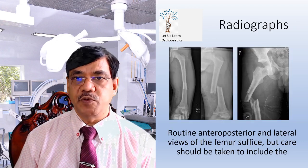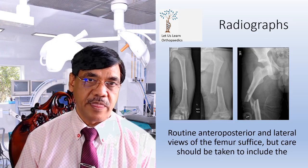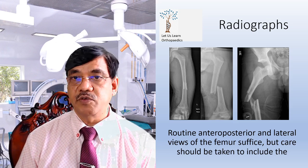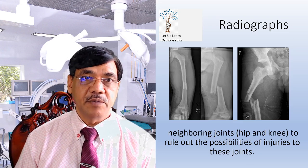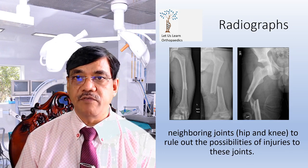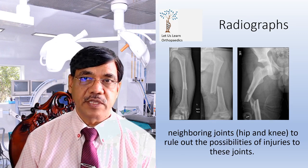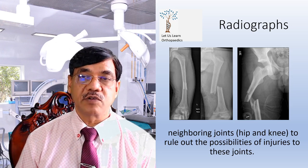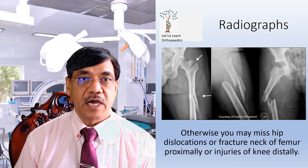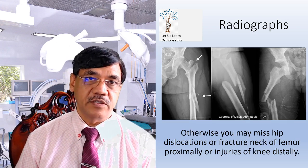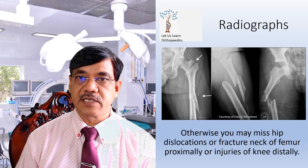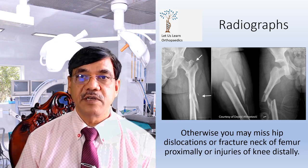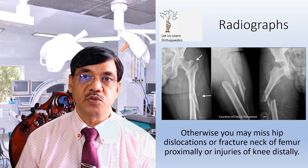On X-ray, routine anteroposterior and lateral views of the femur suffice. Care must be taken to include the neighboring joints, that is, the hip and knee, to rule out possibilities of injuries to the joints. As you can see in this X-ray, the third X-ray shows that along with the fractured shaft femur, there is a dislocation of the hip joint. If you don't include these joints, you may miss a hip dislocation, fractured neck of femur proximally, or injuries to the knee distally. The first X-ray shows an associated fractured neck of femur.